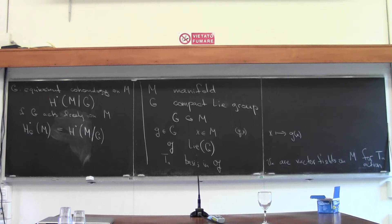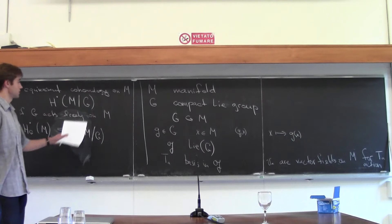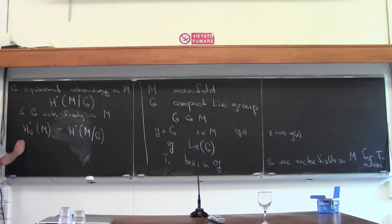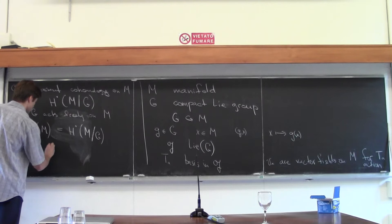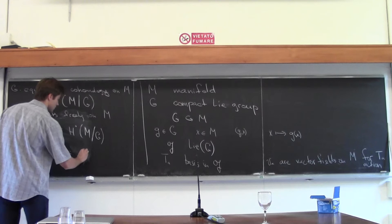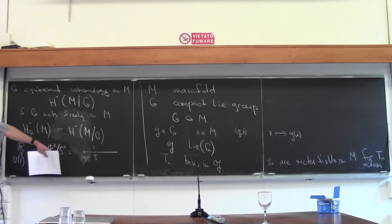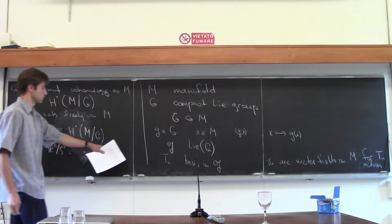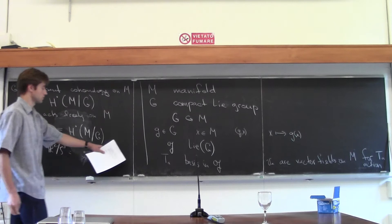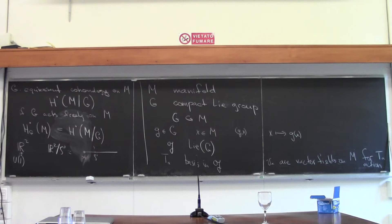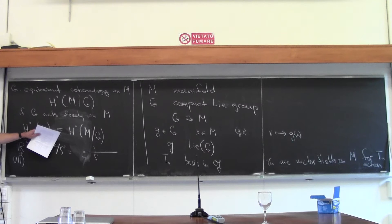But what should we do if the action is not free — if there are some fixed points? Then the quotient is not well-defined. For example, if you take R² and let U(1) act on R² by rotation, then the quotient R²/U(1) is just like R. But the pre-image of the origin is a point, while the pre-image of other points is a circle. Something is different about that origin point, and if you try to compute cohomology in the ordinary way, you would miss some information. Equivariant cohomology tries to capture the relevant geometry of those non-ordinary orbits by doing computations in the space M rather than the quotient space.